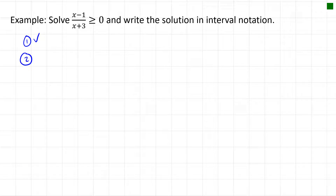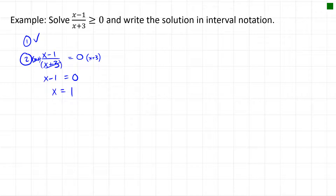In the expression (x − 1)/(x + 3), we find where it equals zero by setting the numerator equal to zero. Multiplying both sides by (x + 3) gives x − 1 = 0, so x = 1. Zero divided by anything is zero, so where the numerator equals zero is our first critical point: x = 1.